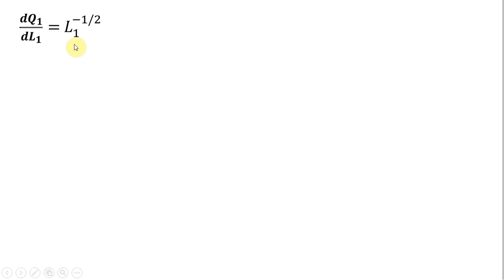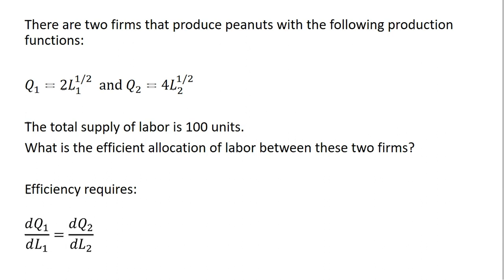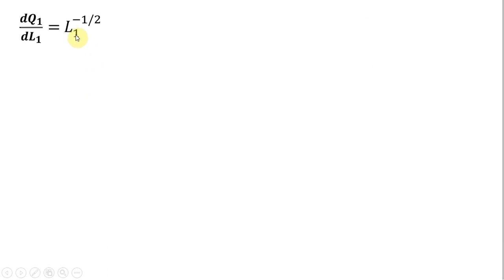So here's the derivative of firm one's production function. So just going back to the other slide here, I'm bringing down the one-half in front, so the two and the one-half cancel, leaving L raised to the minus one-half power. The derivative of the second production function will simplify to the following. Again, reminding us that the efficient allocation of labor between these two firms will be given where the marginal product of labor of firm one equals the marginal product of labor of firm two.